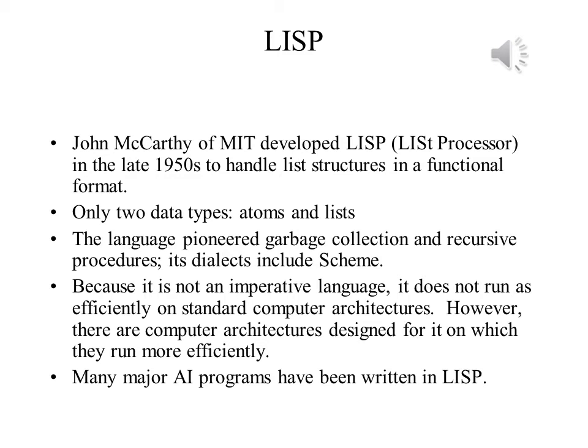John McCarthy developed LISP at MIT in the late 1950s for use in artificial intelligence. Its main use is in the processing of data stored in lists. The language is a functional language, with everything essentially written as a function definition. Lists in LISP are written in a format essentially the same as the programs themselves, enclosed in parentheses and separated by white space. There are, for all practical purposes, only two data types in LISP: atoms, which are primitive data items, and lists. Lists are dynamically allocated, and their representation required that garbage — memory no longer in use but not yet available for reuse — be collected and recycled. It also required the extensive use of recursion, and pioneering work in both problems was done in the implementation of LISP interpreters. The fact that the language is not imperative is a factor in its relatively slow execution speed on standard computers, all of which are, at their core, imperative in design. However, there have been computers designed on which LISP can run more efficiently.